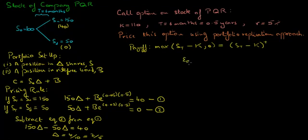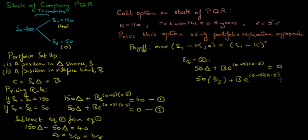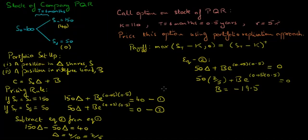Let's take equation two: 50 delta plus the value of the bond position in six months equals zero. Plugging in delta equals 2 over 5, we get 50 times (2/5) plus b, the current value of the bond position, growing at the risk-free rate over six months, equals zero. Solving for b, we get b equals negative 19.5. So we have to buy two-fifths of a share and borrow 19.5 at the risk-free rate to exactly replicate the payoff of this call option.